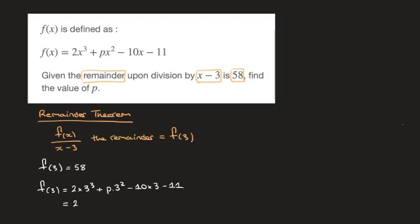And that's equal to 2 times 3 cubed, which is 27, plus p times 3 squared, which is p times 9, so that's 9p minus 10 times 3, which is 30, minus 11.